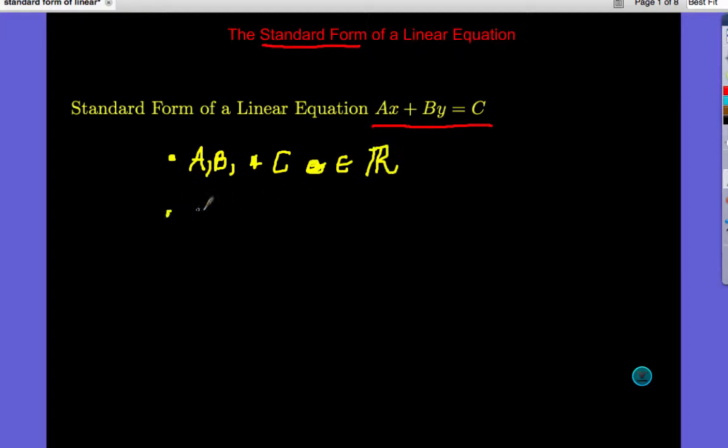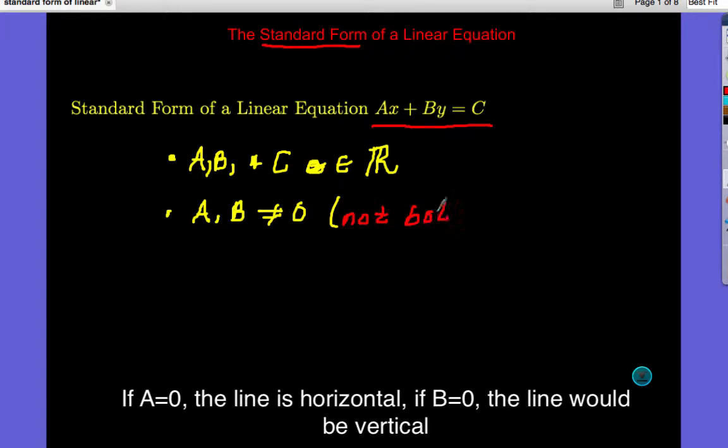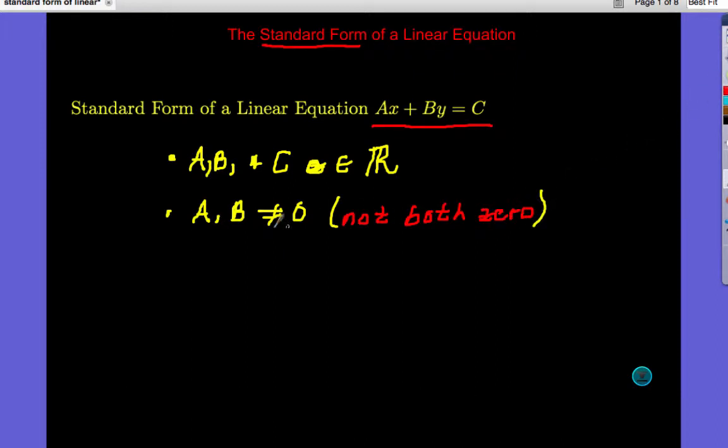Number two, A and B do not equal zero. And we want to make a special note of this, not at the same time. So one of them can be zero, but both cannot be zero at the same time. So it's okay for A or B to be zero, just not at the same time.